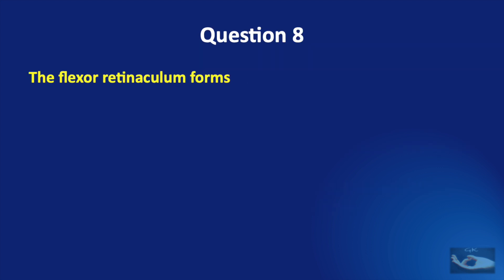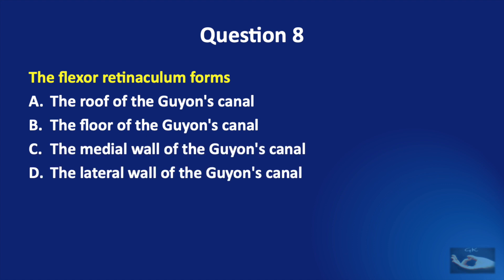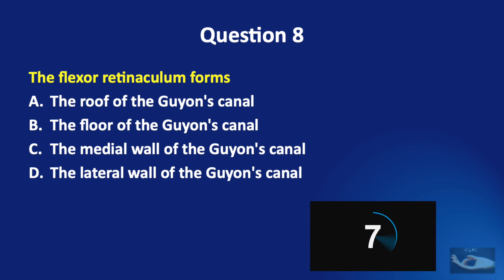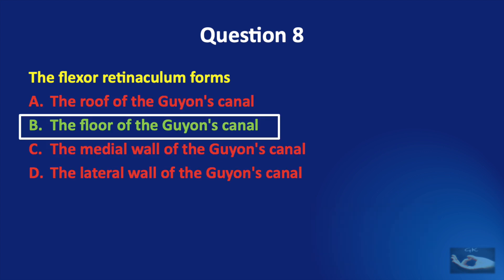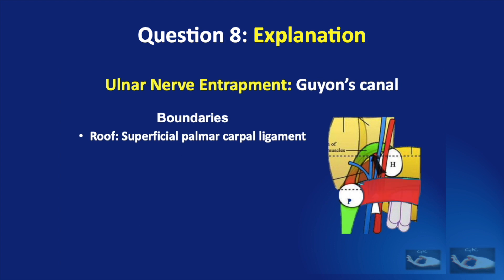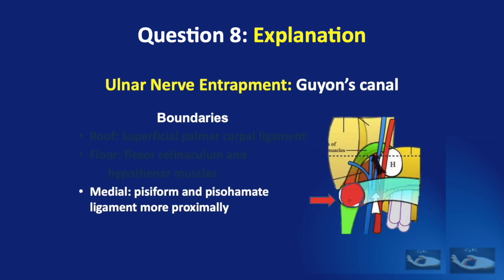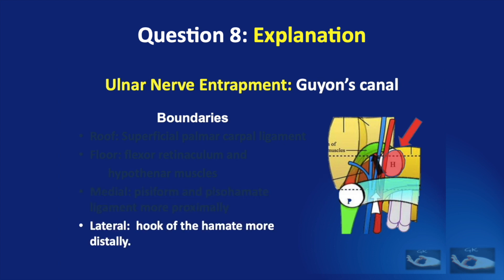Question number eight: the flexor retinaculum forms the roof of Guyon's Canal, the floor of Guyon's Canal, the medial wall, or the lateral wall? The answer is the flexor retinaculum forms the floor of Guyon's Canal. Guyon's Canal is a semi-rigid longitudinal canal in the wrist, about 4 cm long, beginning proximally at the transverse carpal ligament and ending at the aponeurotic arch of the hypothenar muscles. The roof is formed by the superficial palmar carpal ligament. The floor is formed by part of the flexor retinaculum and the origin of the hypothenar muscles. The pisiform bone and the proximal portion of the pisohamate ligament form the medial wall, and the lateral wall is formed by the hook of the hamate bone.